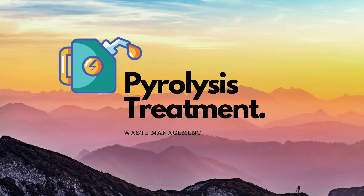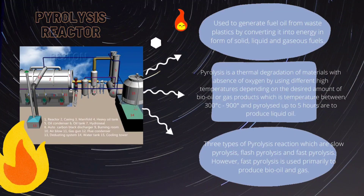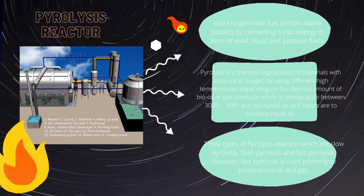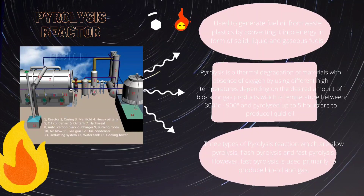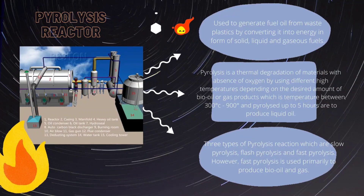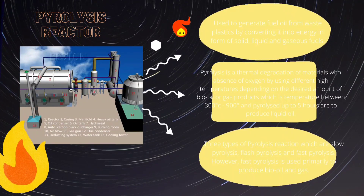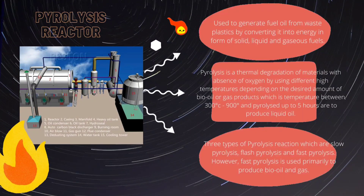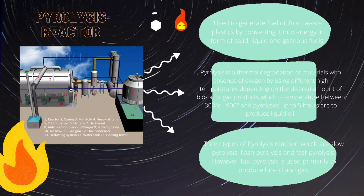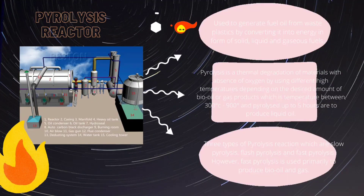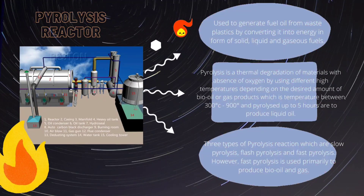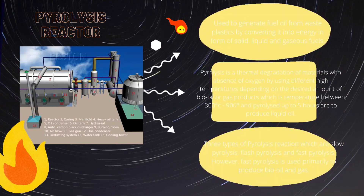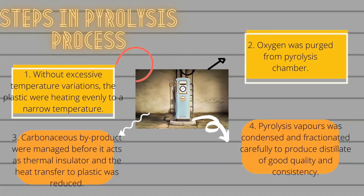Pyrolysis is used to generate fuel oil from waste plastics by converting it into energy in the form of solid, liquid, and gas. Pyrolysis is a thermal degradation of materials with absence of oxygen, using different high temperatures depending on the desired amount of bio-oil or gas. There are 3 types of pyrolysis reactions: slow pyrolysis, flash pyrolysis, and fast pyrolysis.